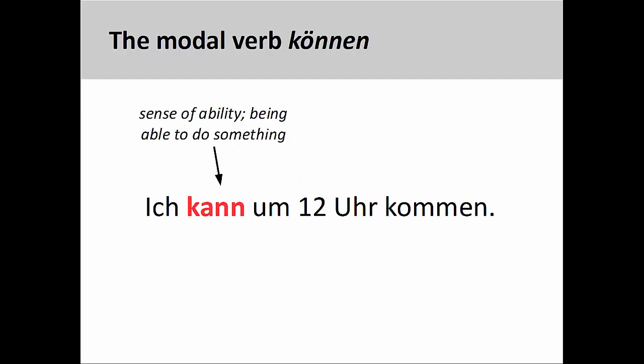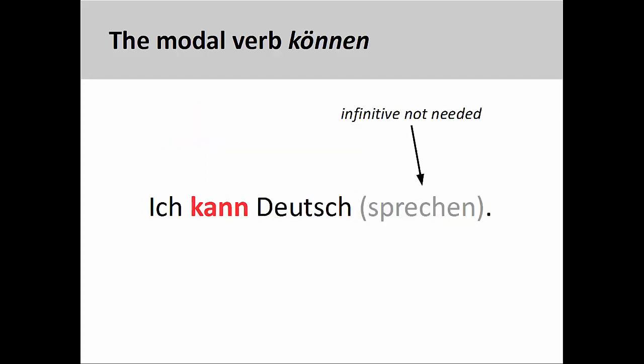The modal verb können conveys a sense of ability, a sense of being able to do something. In the sentence on the screen, Ich kann um 12 Uhr kommen, the subject of the sentence has the ability to come at 12 o'clock. You can also use können without an infinitive to express the knowledge of something, or to know how to do something. For example, Ich kann Deutsch — I know German.